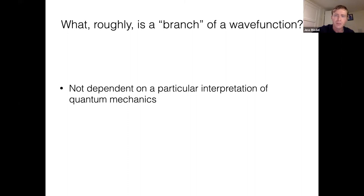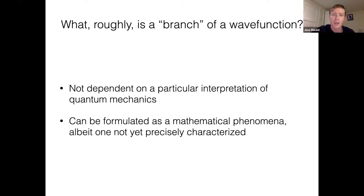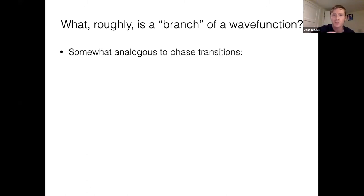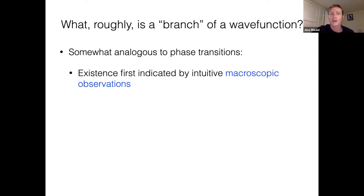So what roughly do I mean? What is the branch of a wave function? By using this word, I have to emphasize that this is not dependent on a particular interpretation of quantum mechanics. This is something that can be formulated as a mathematical phenomenon, albeit one that is not yet precisely characterized. Why should you be interested in something that seems so vague? It's analogously — very loosely analogously — to phase transitions and the historical development of understanding them.